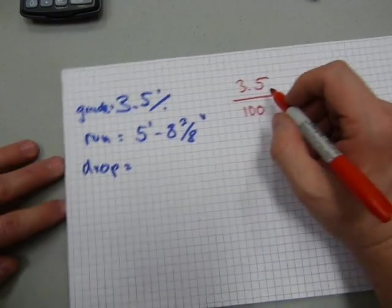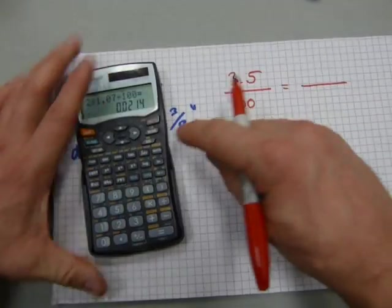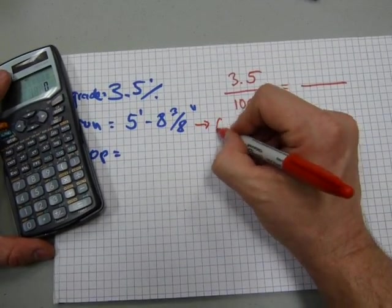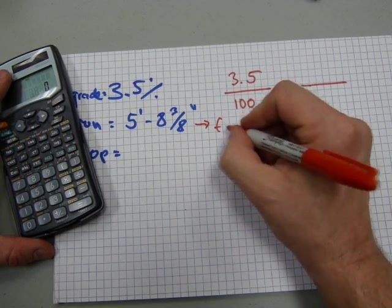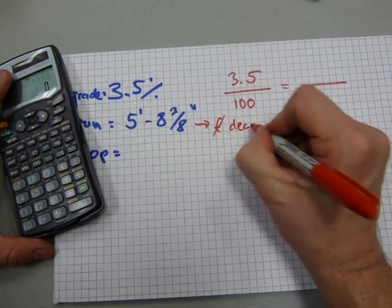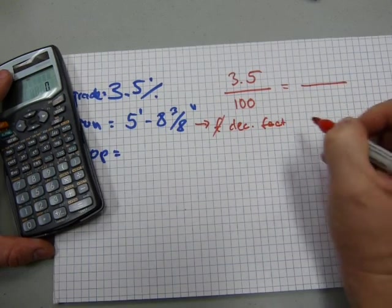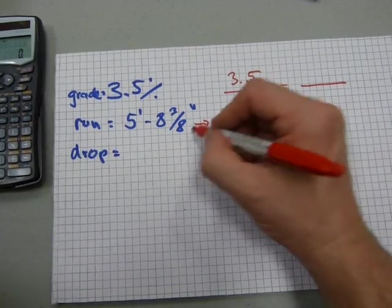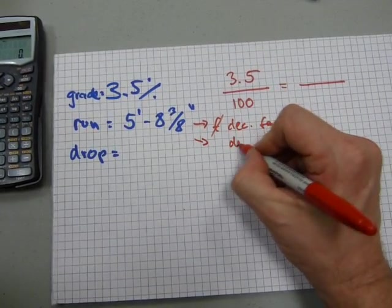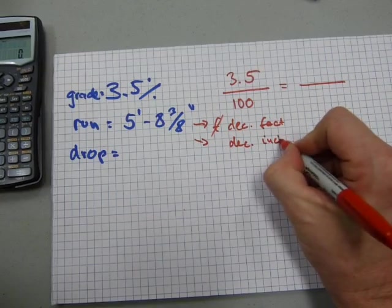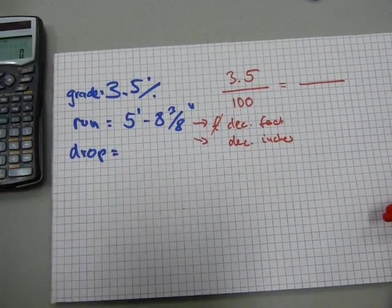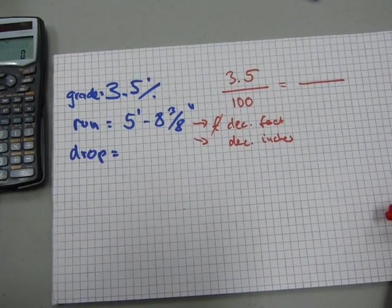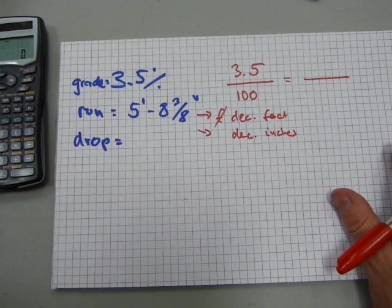This run amount needs to plug in here, but you can't use this on a calculator as is. So this needs to be converted to decimal feet, or you have an option. You either convert it to decimal feet and your drop amount will be in decimal feet as well, or you convert it to decimal inches and your drop amount will be in inches. It's way easier to get it done in decimal inches. So let's do it in decimal inches.